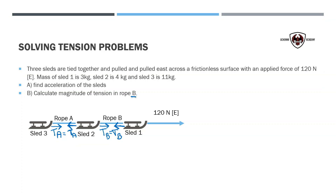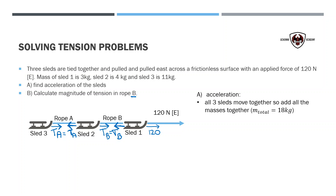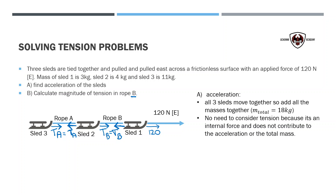When you're solving tension problems, it doesn't actually matter which sled you use. You just have to be careful in drawing the free body diagrams of each sled you're utilizing. The first question will always be to find the acceleration, and all the sleds will move together. The ropes are assumed to be massless, therefore they do not contribute to the mass. They don't stretch, meaning the acceleration is all the same. So we can really just add up all the masses together — that's 18 kilograms.